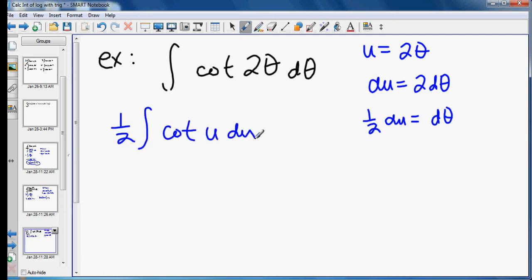And the rule for the integral of cotangent u is the natural log of the absolute value of sine of u plus c. 1 half natural log absolute value of sine of 2 theta plus c.